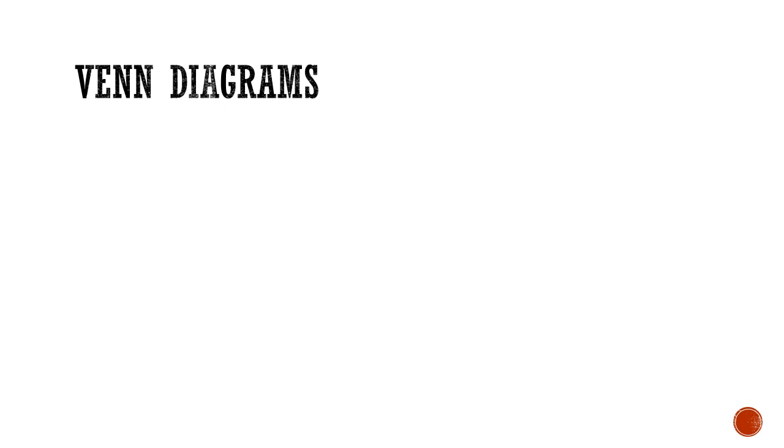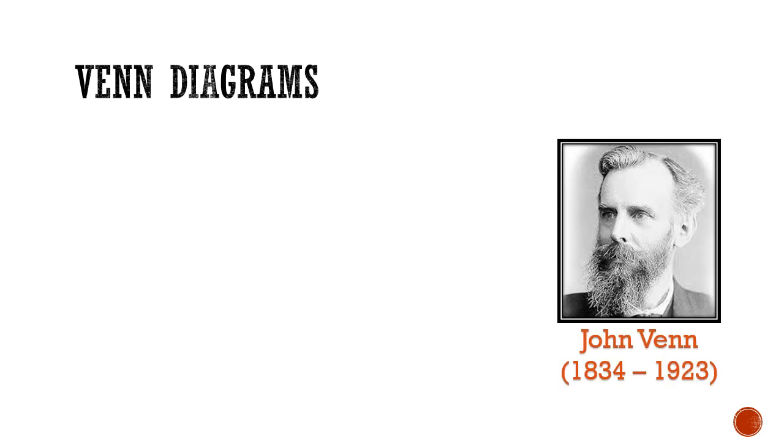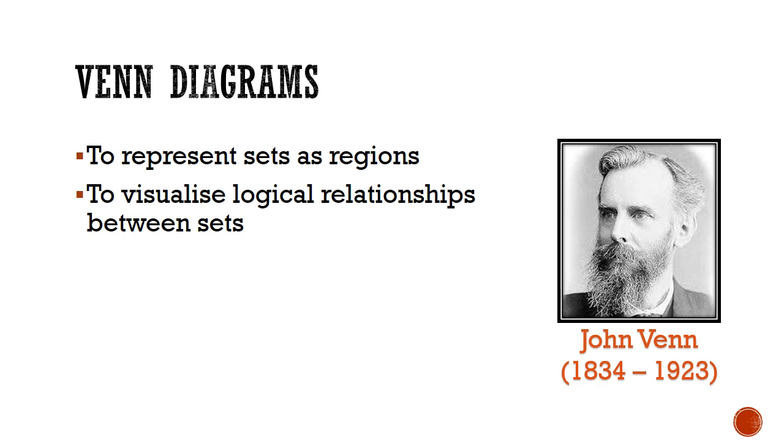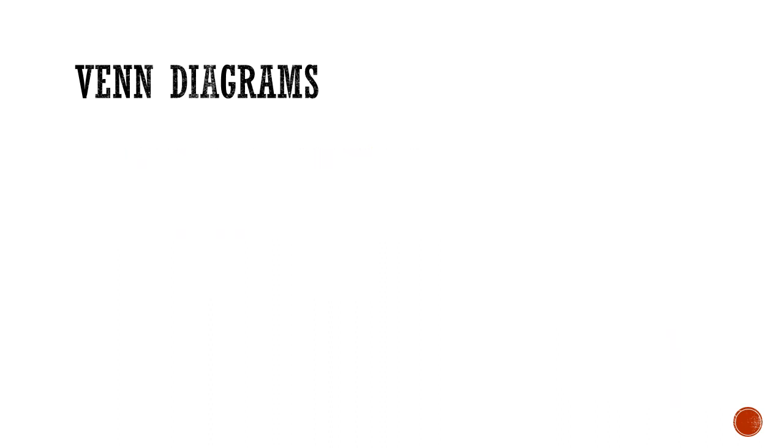Named after the mathematician John Venn who first introduced this diagram, Venn diagrams are used to represent sets as regions and they are used to visualize the logical relationship between sets. So let's begin today's lesson by first building ourselves a Venn diagram. And what better universal set to use than the O-G Avengers from the Marvel Cinematic Universe.